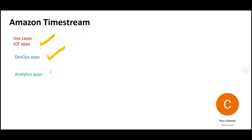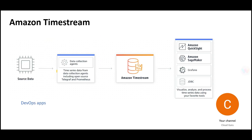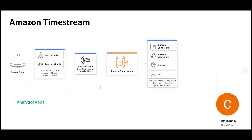There are three main use cases: IoT apps, DevOps apps, and Analytics apps. For the DevOps use case, data streams are collected as time-series data and put into Amazon Timestream, then you plug reporting tools on top of it. For the analytics use case, you have a source, plug in Kinesis or similar services to massage the data, then enter the data into Timestream, after which you can plug reporting or other applications to fetch and analyze that data.